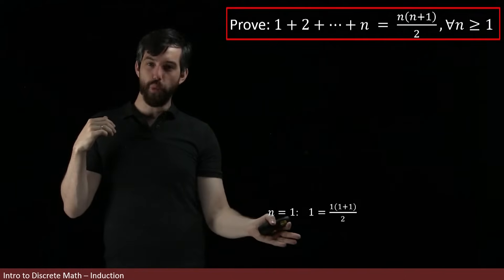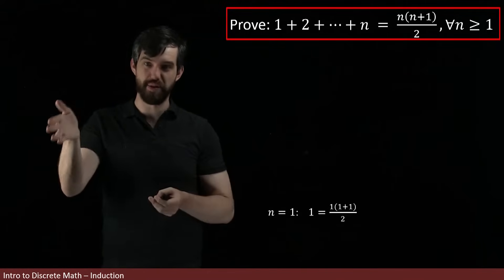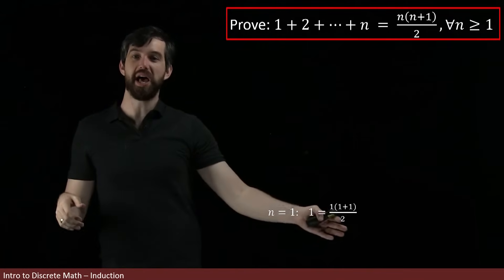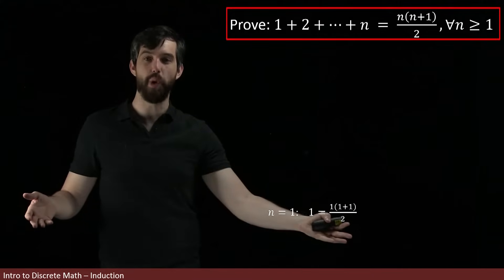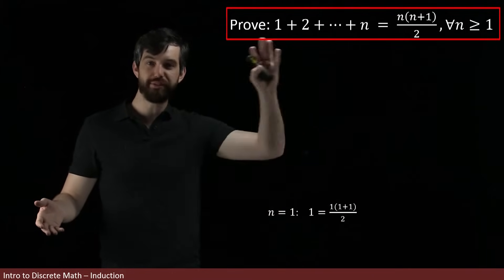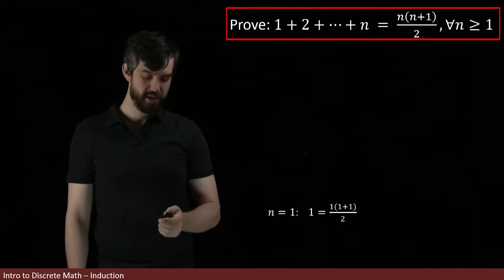For instance, in the n equal to 1 case, you're taking the sum of only 1 thing, the number 1, and it's equal to 1 times 1 plus 1, which is 2 divided by 2. This is just 1. So when n is equal to 1, this formula is valid.